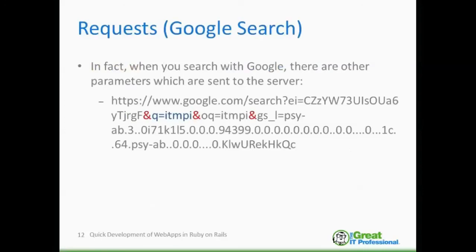What happens when we type 'itm pi' into the Google search input box is that we send this kind of request to the server. In this slide I'm showing the exact list of parameters which get passed when you perform an actual search on Google. As you can see, the first part of the address is exactly the same — www.google.com/search — and then we get a bunch of parameters, among which the q parameter. The ampersands separate different parameters, so Google also sends to the server other information such as the parameters ei, oq, and others.